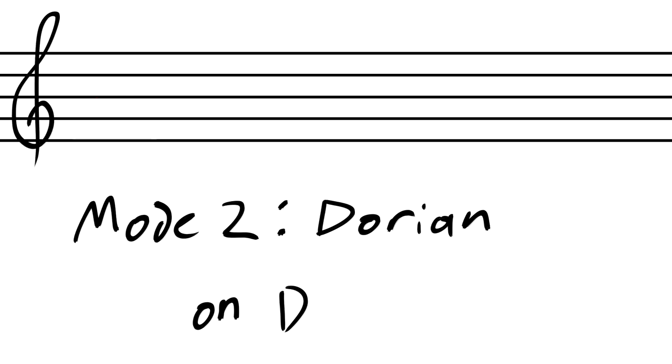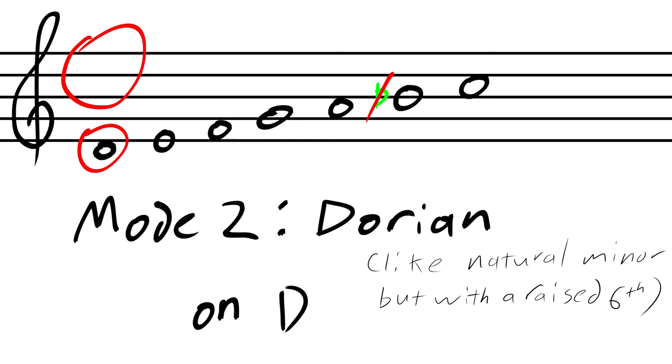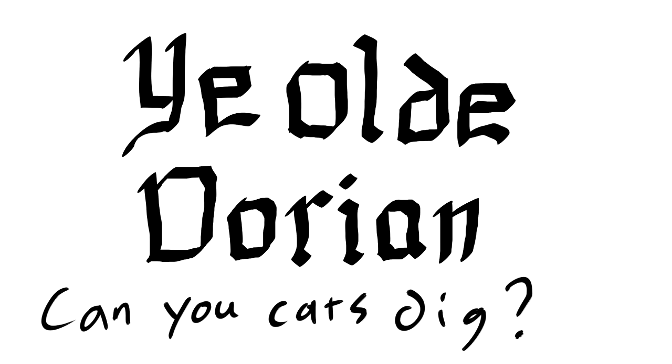Next is the second mode, Dorian. In this case, we start on D. Dorian is like a natural minor scale, but because of our key signature, the sixth scale degree ends up being raised. So like in a normal D minor scale, that would be a B flat, but in this case, it's a B natural. This mode is often used in medieval and renaissance music and strangely enough, minor jazz music as well. Not to mention its regular use in movie scores.